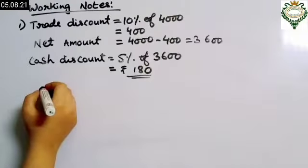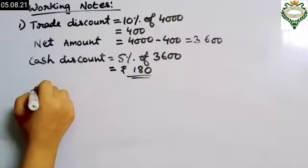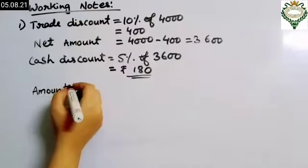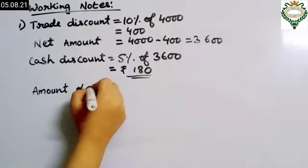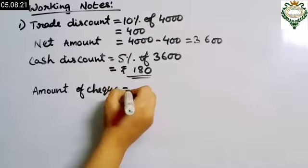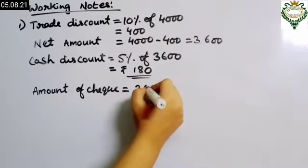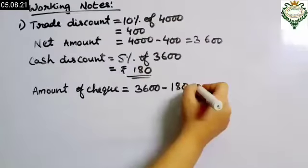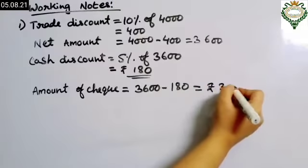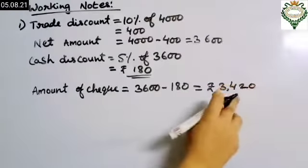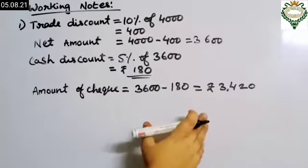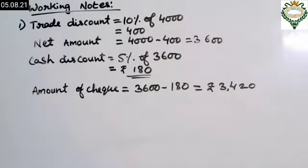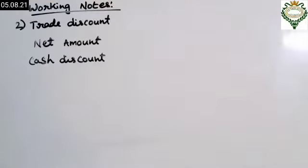The final amount of the check to be paid, after deducting both trade discount and cash discount, is: ₹3600 − ₹180 = ₹3420. This is the amount we have to record in the book on the debit side in the Amit account.